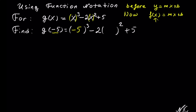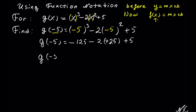So we have negative 5 to the third, and negative 5 to the second. Now we just follow order of operations. Negative 5 to the third: negative times negative is positive, times negative we get a negative — 5 times 5 is 25, times 5 is 125. Minus 2 times negative 5 squared: negative times negative is positive, 5 times 5 is 25, plus 5. So we get negative 125, minus 2 times 25 is 50, plus 5.